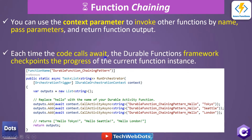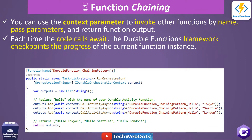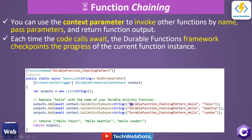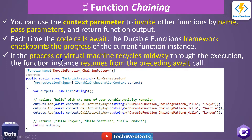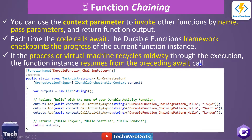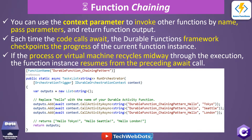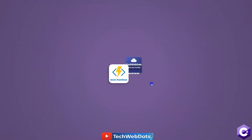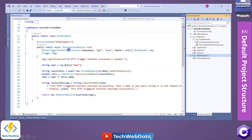Each time the code calls await, the Durable Functions framework checkpoints the progress of the current function instance. It checks what is happening in this function and processes the result. If the process or virtual machine recycles midway through the execution, the function instance resumes from the preceding await call. All state information is managed behind the scenes in a storage account.